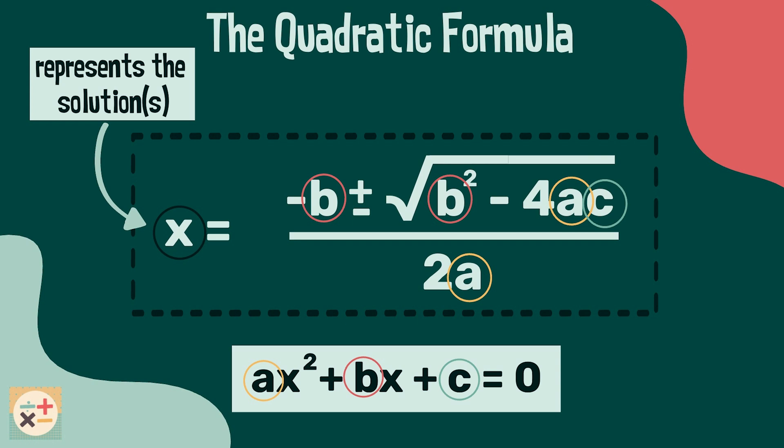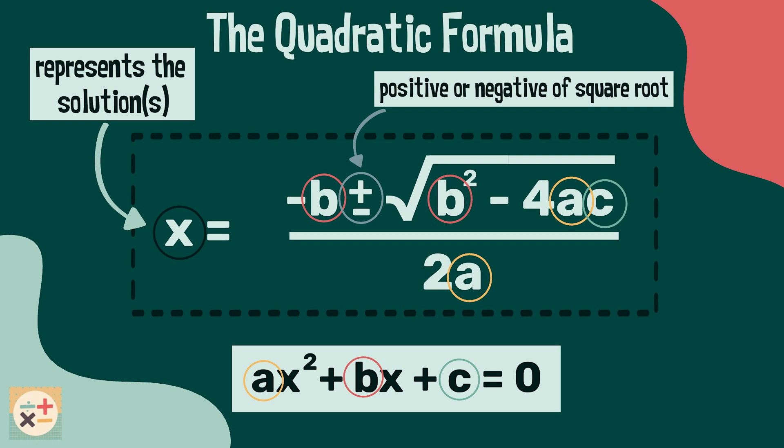You may be wondering what this plus and minus notation here means. This means that when calculating the square root we need to apply the positive and the negative value. We are essentially using two formulas, one using the positive square root and one using the negative square root. For a refresher on square roots, see our video linked above.